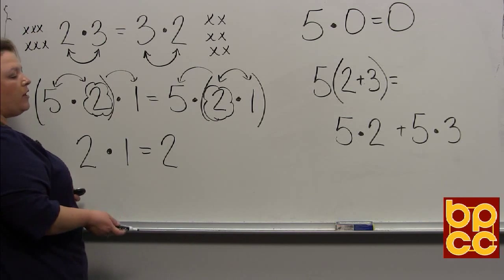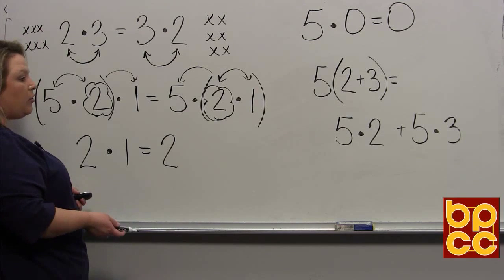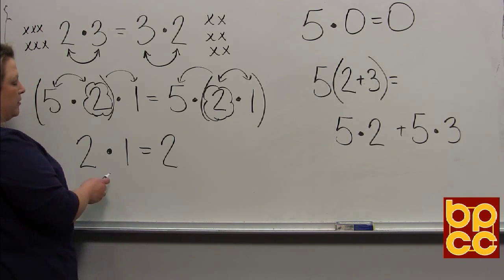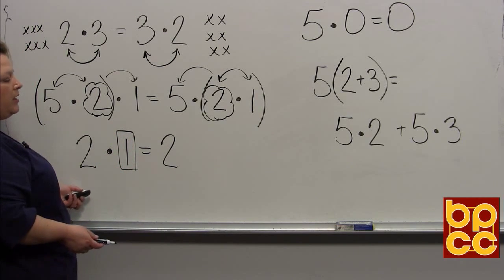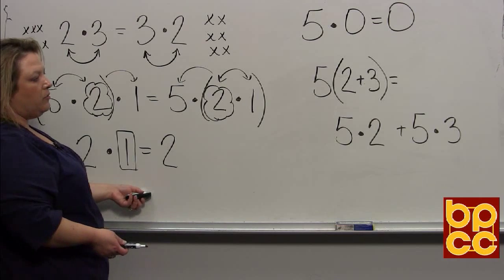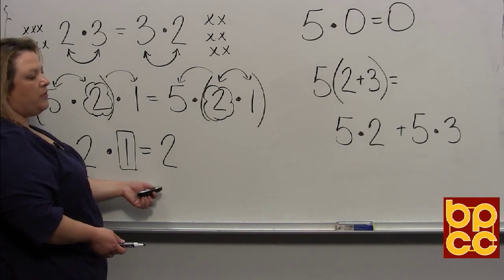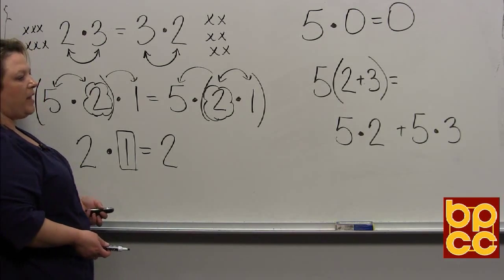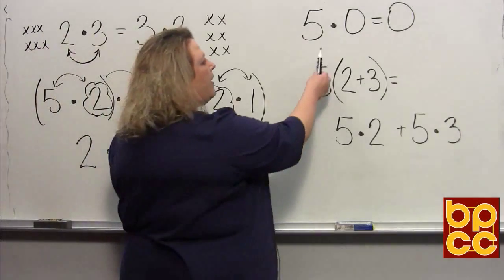Then we have the identity property. What is the identity property? Identity means you get the identical thing back when you do multiplication. And the multiplication identity is 1, because 2 × 1 is 2. No matter what you do times 1, you still get that same identical thing back, which is why it's called the identity property.